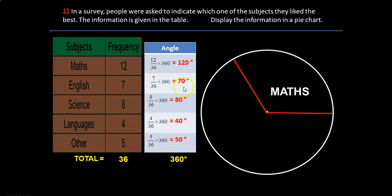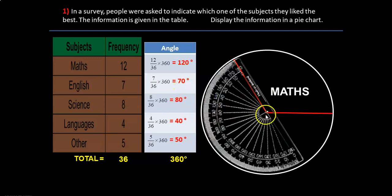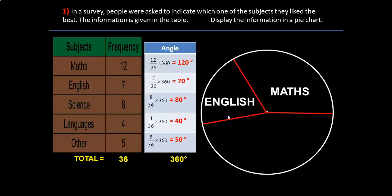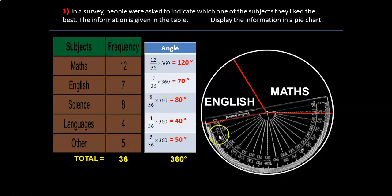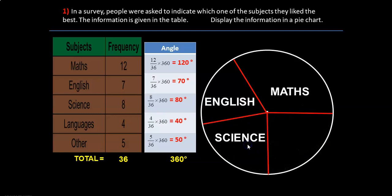Now we need to draw for English 70 degrees. Take your protractor, place it on the line over here. And then count 70 all the way up to here. And then draw a line. And then write down English for that. And so on. You need to draw 80 degrees for science. This is the line that you are looking for not this line. And then from here 80 is right over here. And then that represents science.